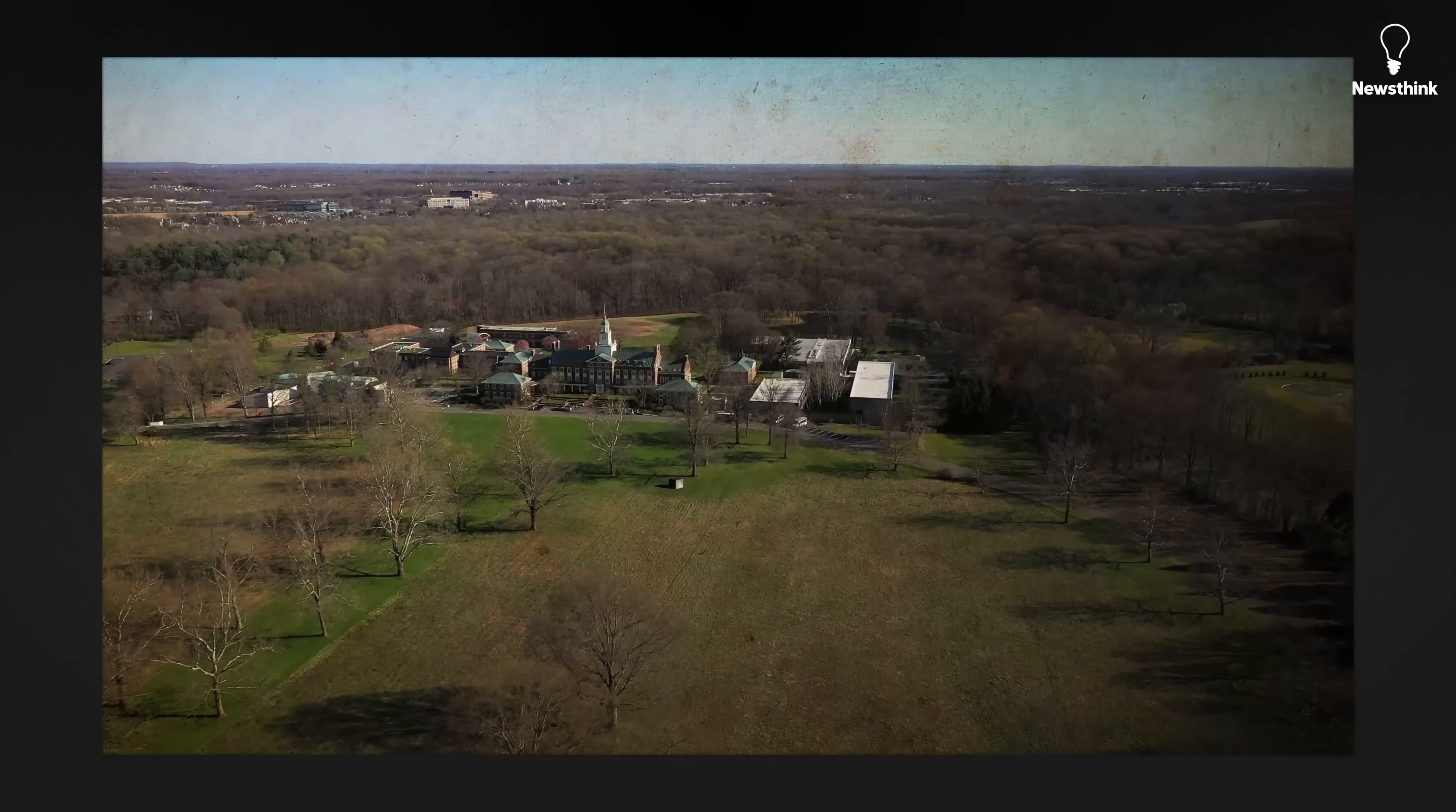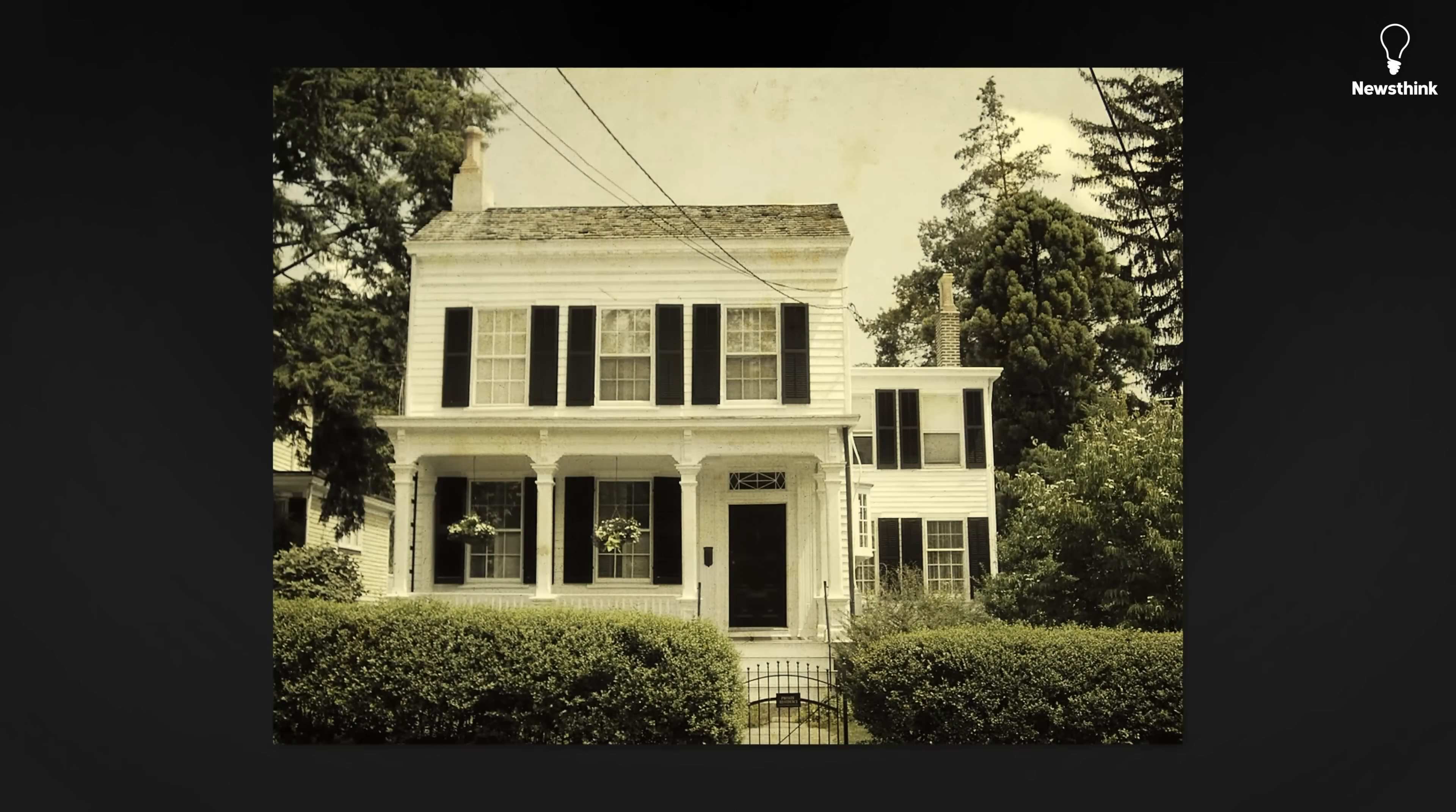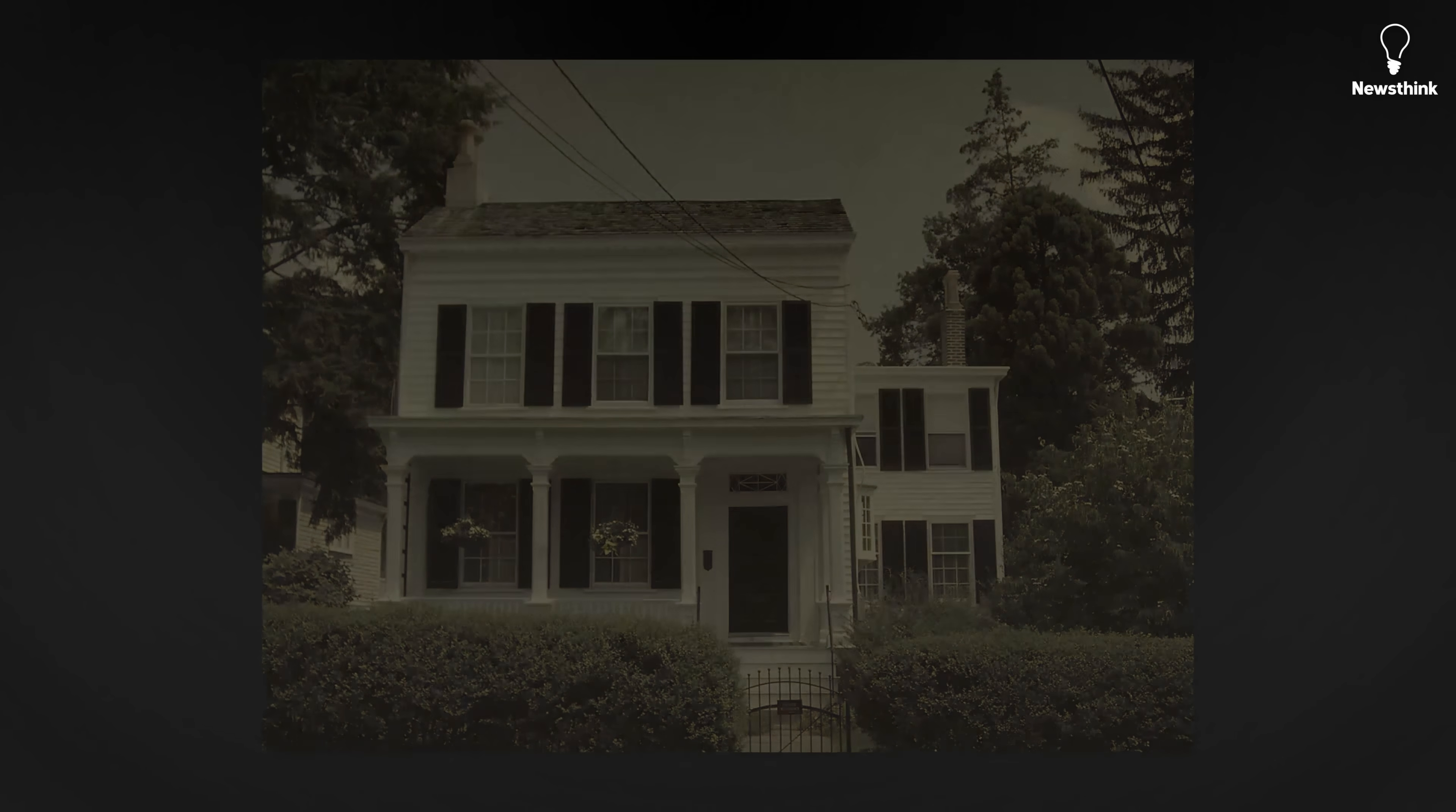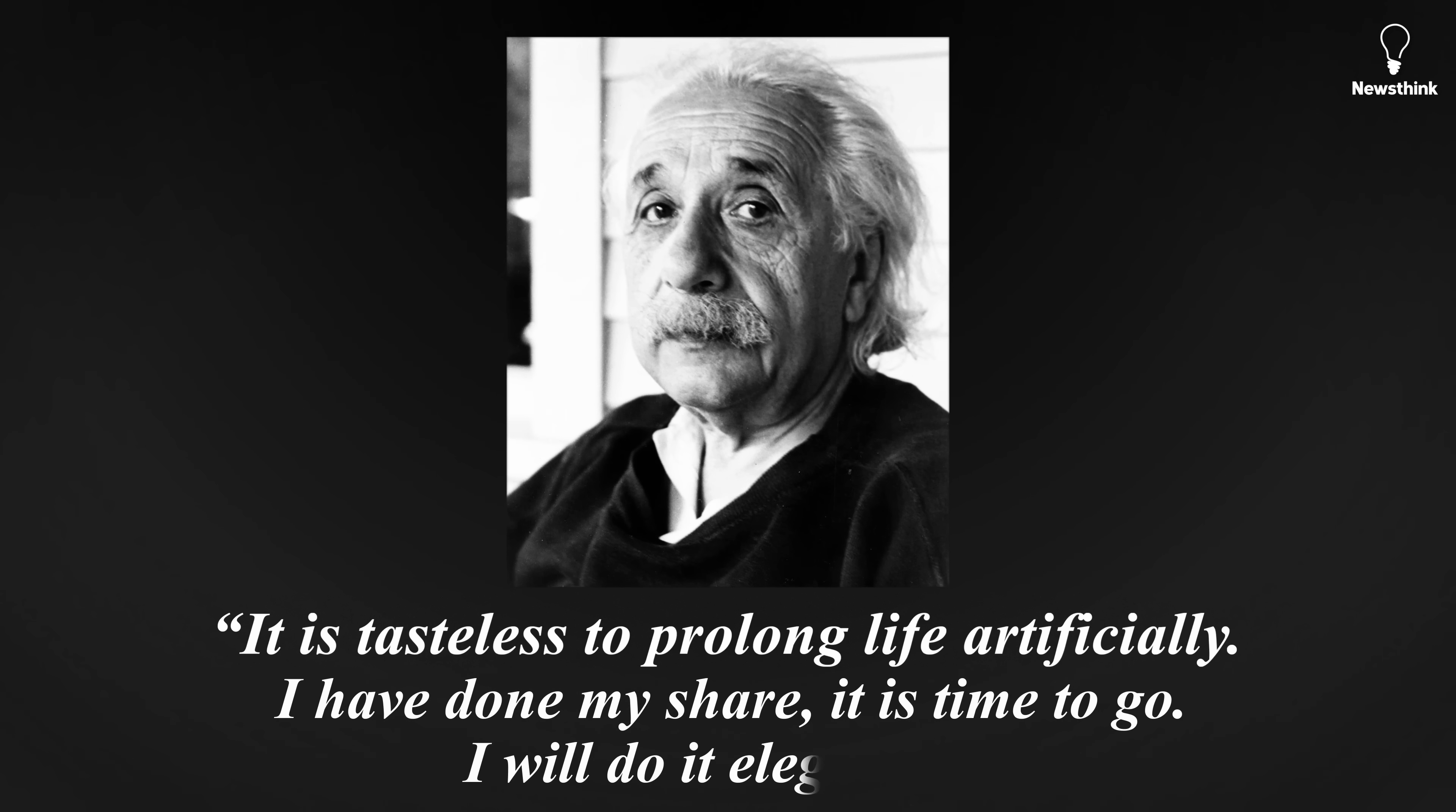On April 12, 1955, Einstein went to work at the Institute for Advanced Study, but complained of pain in his abdomen. The next day, he collapsed at home with a ruptured aortic aneurysm and was later taken to Princeton Hospital. He declined surgery, content with the fullness of his life. He said to his secretary, It is tasteless to prolong life artificially. I have done my share. It is time to go. I will do it elegantly.